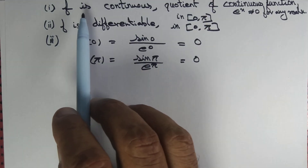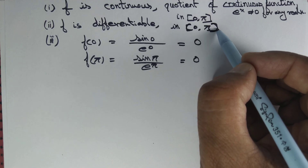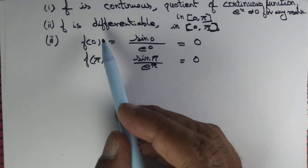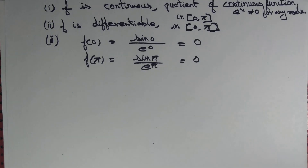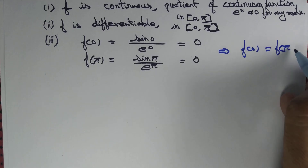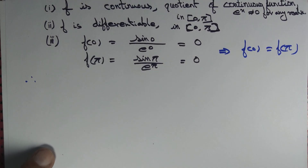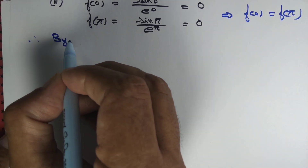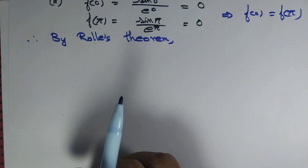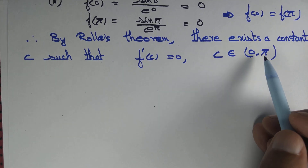All three criteria are now satisfied: f is continuous on the closed interval [0, π], differentiable on the open interval (0, π) — we don't need to show differentiability at the endpoints — and f(0) = f(π). Since these three criteria are satisfied, Rolle's theorem is applicable. Therefore, by Rolle's theorem, there must exist a constant c such that f'(c) = 0, where c belongs to the open interval (0, π).